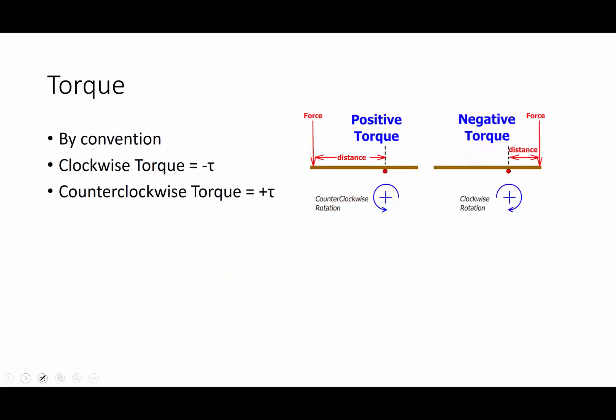By convention, when we're dealing with torque, clockwise torques are considered negative torques, and counter-clockwise torques are considered positive torques. This is, if you're going to communicate with the entire rest of the mathematical problem-solving world, that's the way it works.